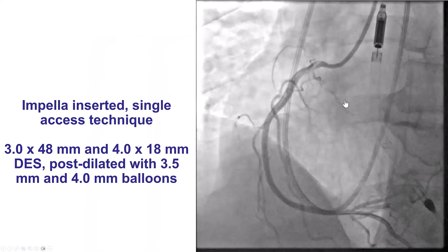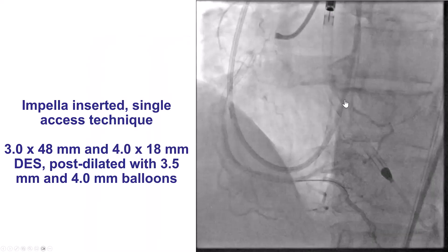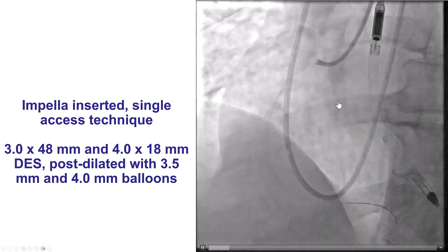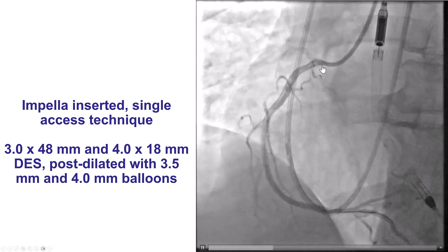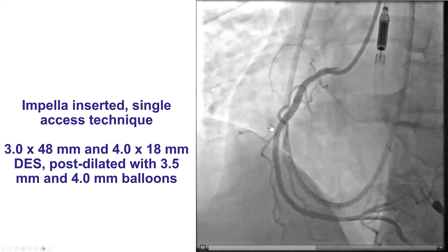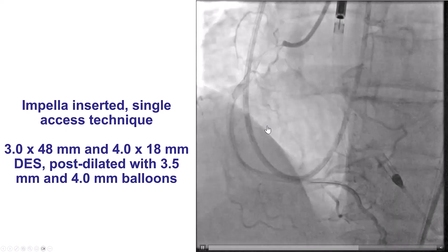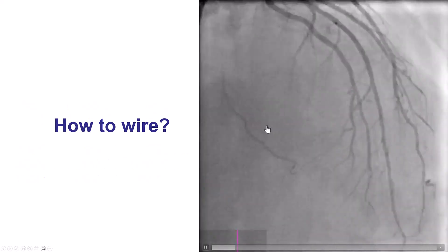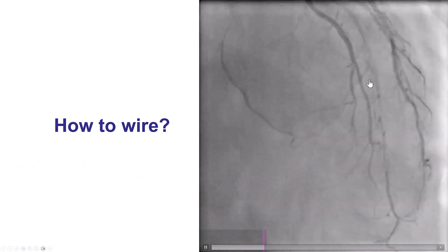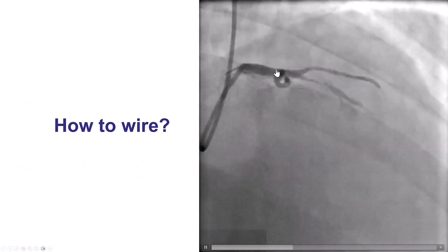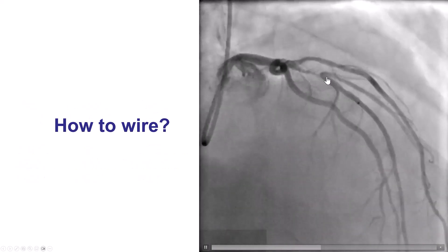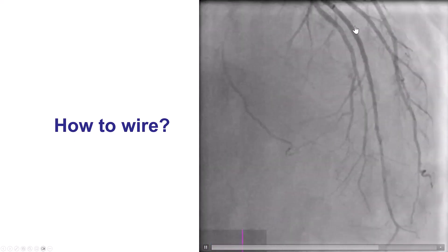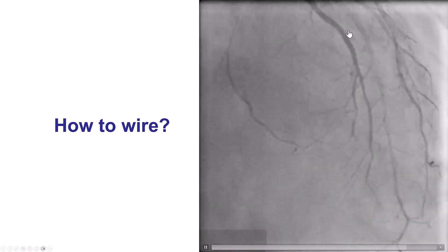Because of the low ejection fraction, he had an Impella CP inserted, and then the right coronary artery was successfully recanalized. But then the challenge was about the LAD, and as we mentioned before, going with a wire through this bend was challenging.